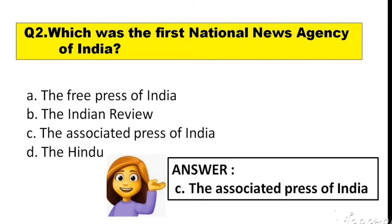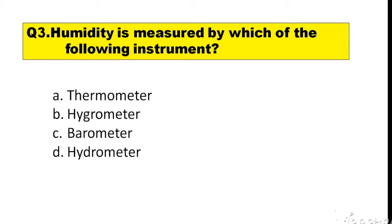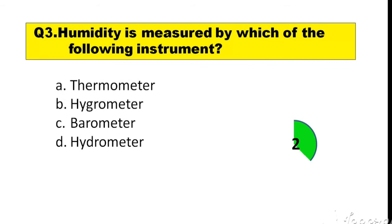Question number 3. Humidity is measured by which of the following instruments? The options are: A. Thermometer, B. Hygrometer, C. Barometer, D. Hydrometer. The right answer is option B — Hygrometer.